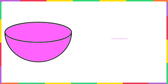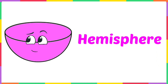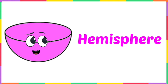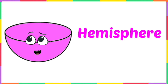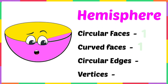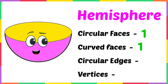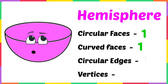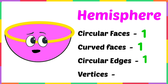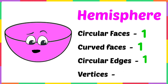Hi, I am a hemisphere! I am like half of a ball. I am made up of two faces — one curved face and one circular face. I also have one circular edge, and I do not have any vertices.